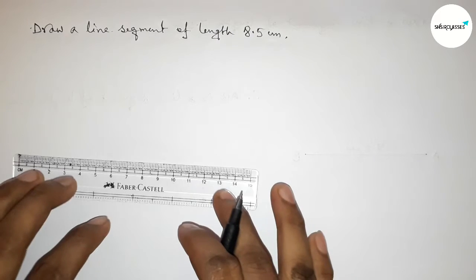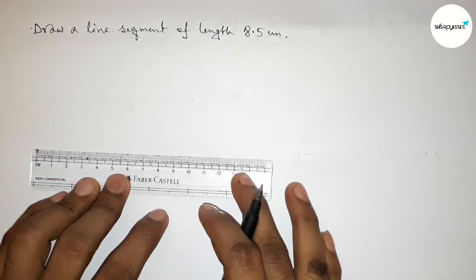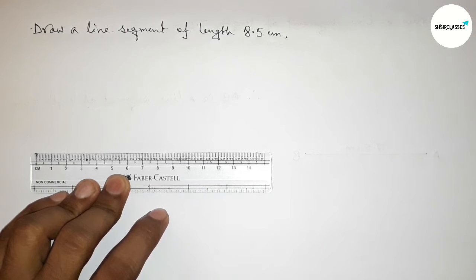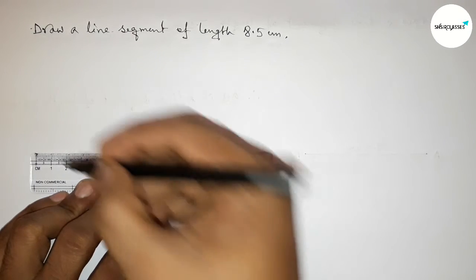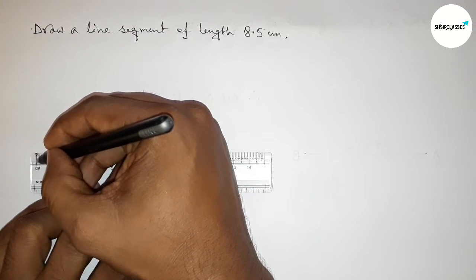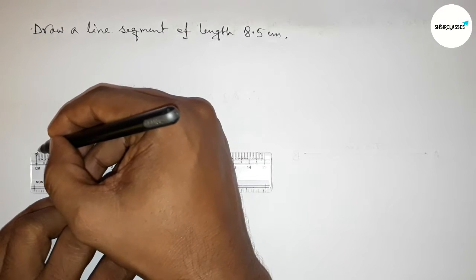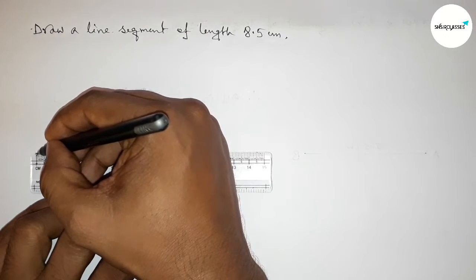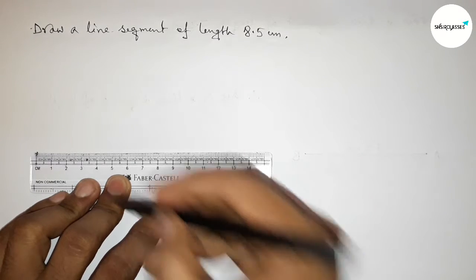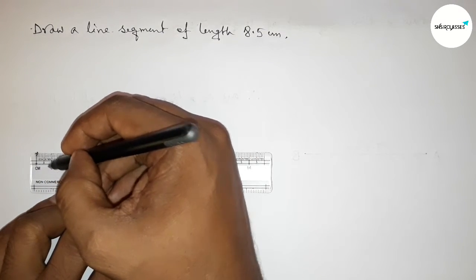First, putting the scale here perfectly, then measure the length 8.5 centimeters. So first counting, this is the starting zero. So first marking here the starting zero, then counting, so this is zero, one...